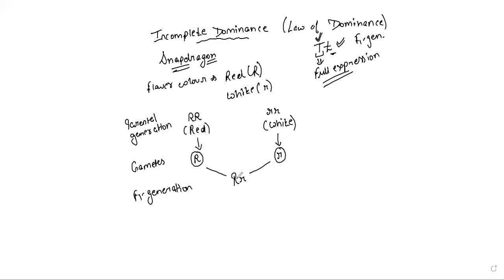In Mendel's cross, the F1 generation — the heterozygous situation — produced all tall plants. For snapdragon flowers, ideally according to Mendel's law of dominance, all flowers formed in F1 generation should have red color, because if the allele shows complete dominance, a single dominant allele is enough to give red color. But what was the difference? All those plants were having pink flowers.